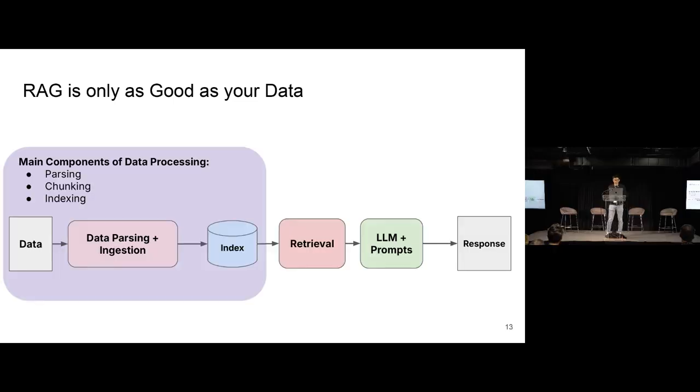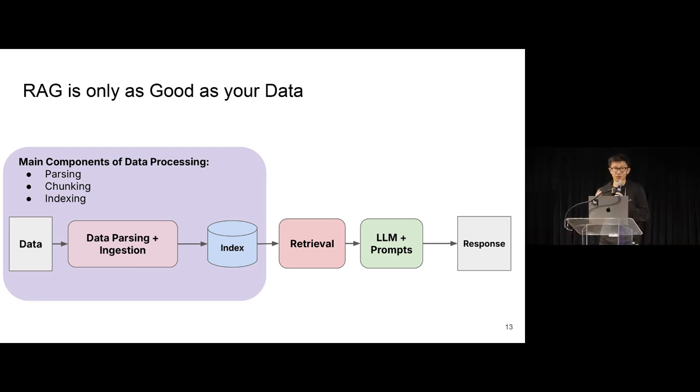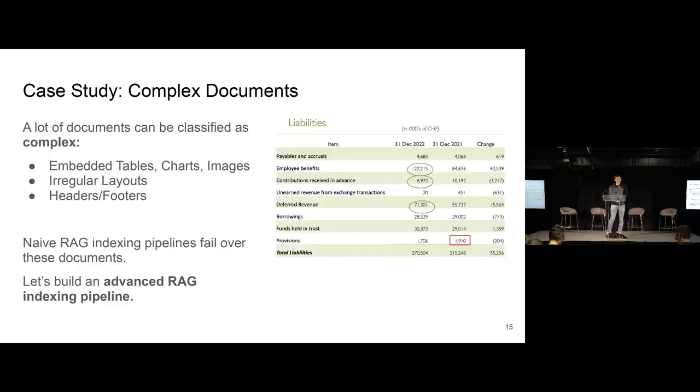Some of the main components of data processing include the following. There's parsing, there's chunking, and there's indexing. We'll talk about each of these components in just a bit. But first, one common use case we see over and over again within the enterprise is this idea of a complex document.